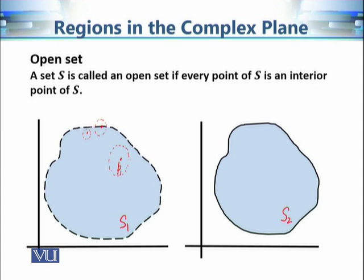The point at the boundary is not included in S1 because the boundary is dashed — it is not continuous, so the boundary is not included. Therefore, for every point of S1 there exists an epsilon neighborhood contained in S1, meaning every point of S1 is an interior point. So we can say that S1 is open.